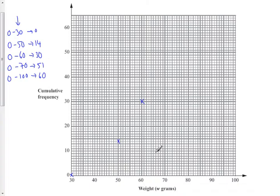At 70, we're plotting 51. At 70, we plot 51. And 100, we plot 60. So all the way up here. We're going to plot 60.